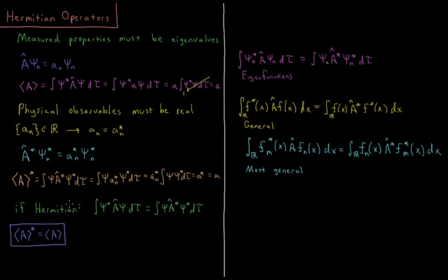So that is the definition of a Hermitian operator, is if the integral of psi star A psi is equal to the integral of psi A star psi star. If that's true, then the complex conjugate of our expectation value is equal to the expectation value, and our expectation value is real. So if this is true, we get real expectation values, real eigenvalues, and this corresponds to a measured property that we can have assurance that it's not any kind of imaginary number.